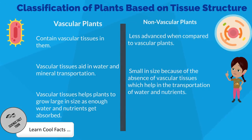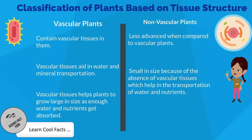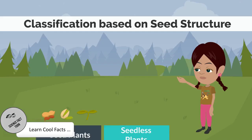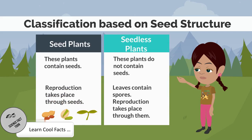Classification based on tissue structure. Vascular Plants: These plants contain vascular tissues and they aid in water and mineral transportation from soil to various parts of plants, which helps plants to grow large in size. Example: ferns. Non-vascular Plants: These plants are less advanced when compared to vascular plants and are small in size because of the absence of vascular tissues.